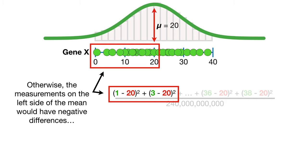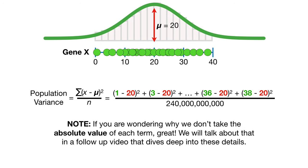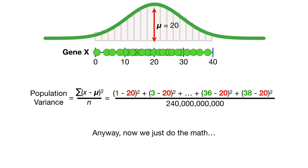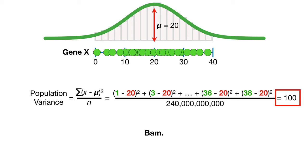Otherwise, the measurements on the left side of the mean would give negative differences, which would cancel out the positive differences from the measurements on the right side of the mean. Note, if you are wondering why we don't take the absolute value of each term, great! We'll talk about that in the follow-up video that dives deep into these details. Anyway, now we just do the math, and we get 100 for the population variance.